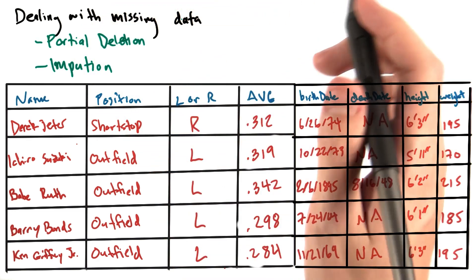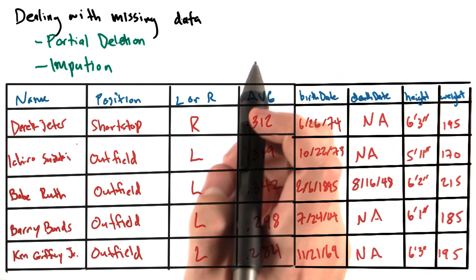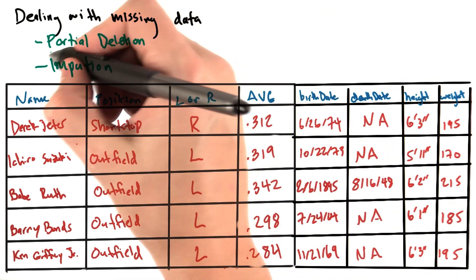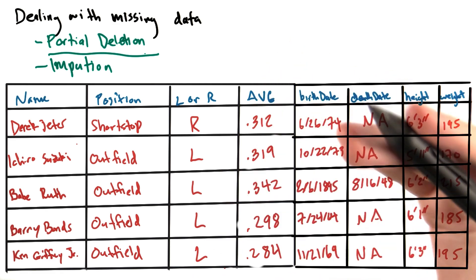Partial deletion is exactly what it sounds like: limiting our data set for analysis to the data we have available to us. Let's discuss partial deletion further.